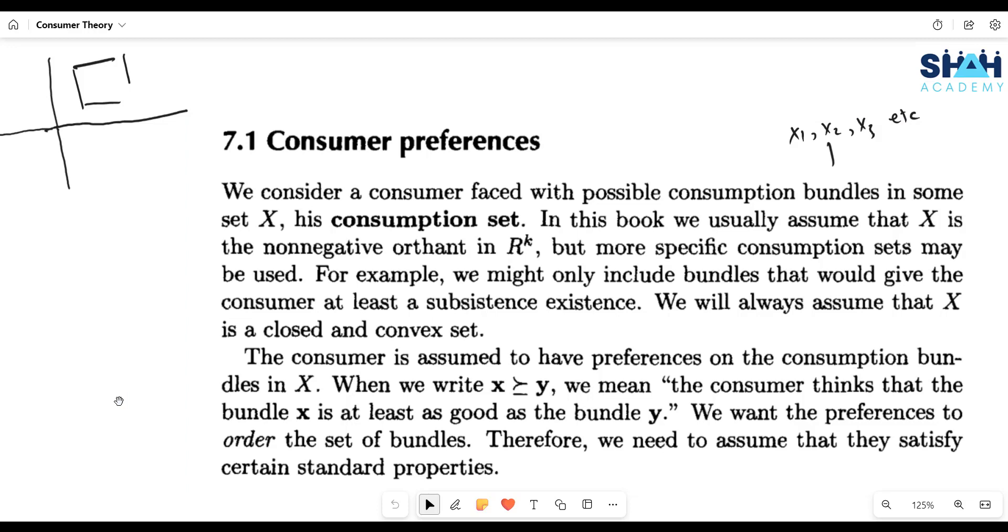For example, if there are two bundles in the consumption set, one is X and the other is Y, so this notation means that X bundle is at least as preferable as bundle Y. However, if you remove this equality sign, then X bundle will strictly be preferred to bundle Y.